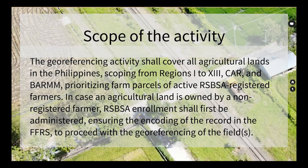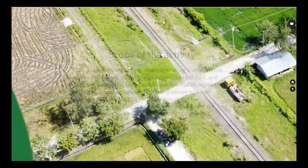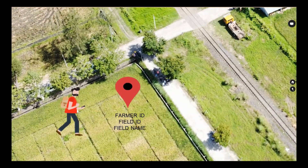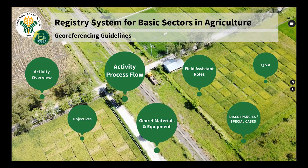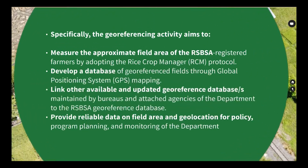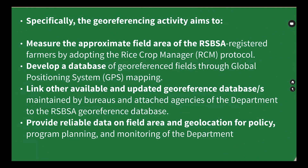The concept of this activity is walking around the RSBSA registered farm area. Specifically, the geo-referencing activity aims to measure the approximate field area of RSBSA registered farmers by adopting the Rice Crop Manager (RCM) protocol, and to develop a database of geo-referenced fields through Global Positioning System (GPS) mapping.